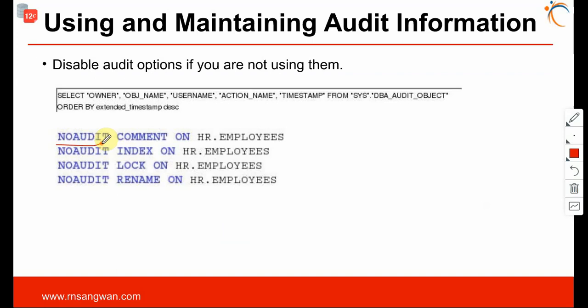To disable audit options, first run: SELECT object_name, user_name, action_name, timestamp FROM SYS.DBA_AUDIT_OBJECT to see the full list. Then from the selected list you can disable specific ones, for example: NO AUDIT INDEX ON HR.EMPLOYEES; NO AUDIT LOCK ON this table. This is how you disable whatever you want — you simply put NO before whatever statement was there to disable it.